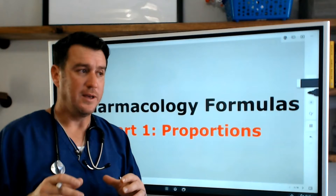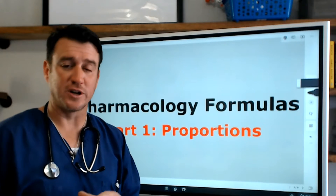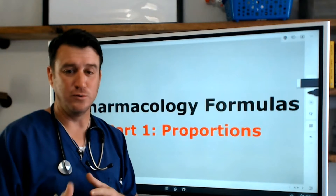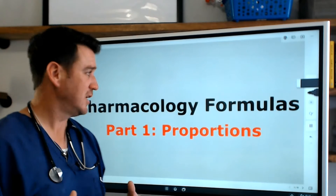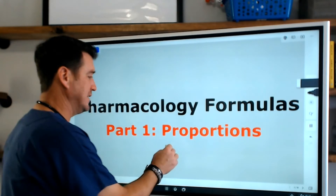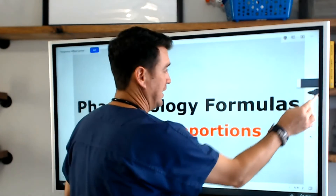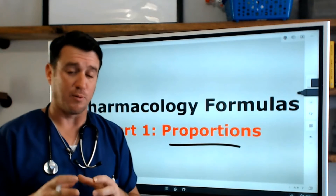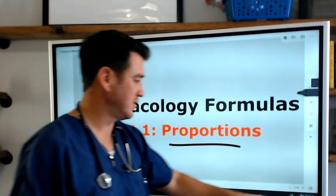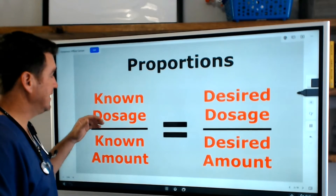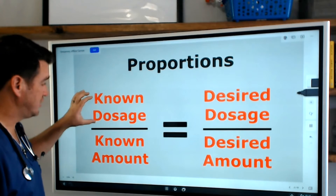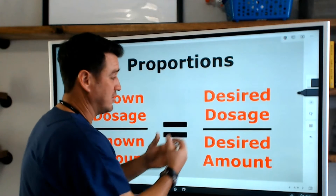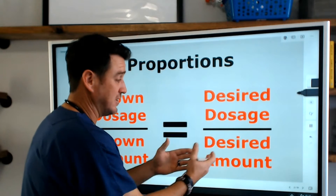So as we know, during your pharmacology class you're going to learn three primary formulas. These formulas are important — you recognize how to use them in certain clinical situations. But the only one we're focusing on in this video is the proportions formula. We want to make sure that we understand how to operate with proportions. Here's the formula: you take your known dosage divided by your known amount, and that will equal your desired dosage divided by your desired amount.